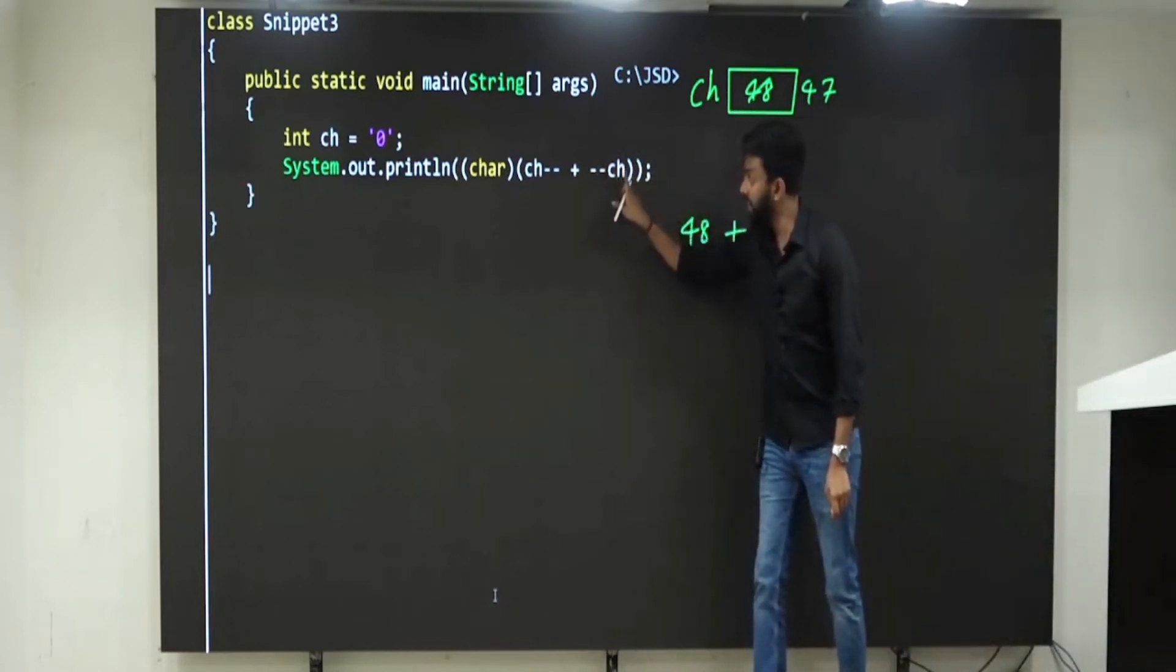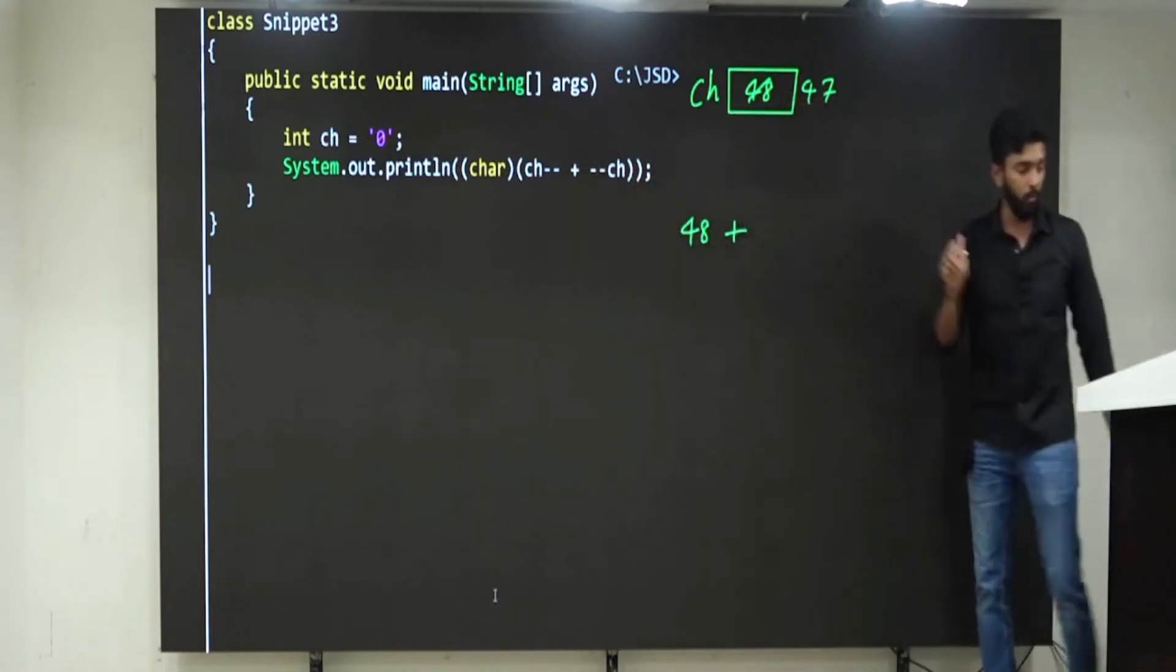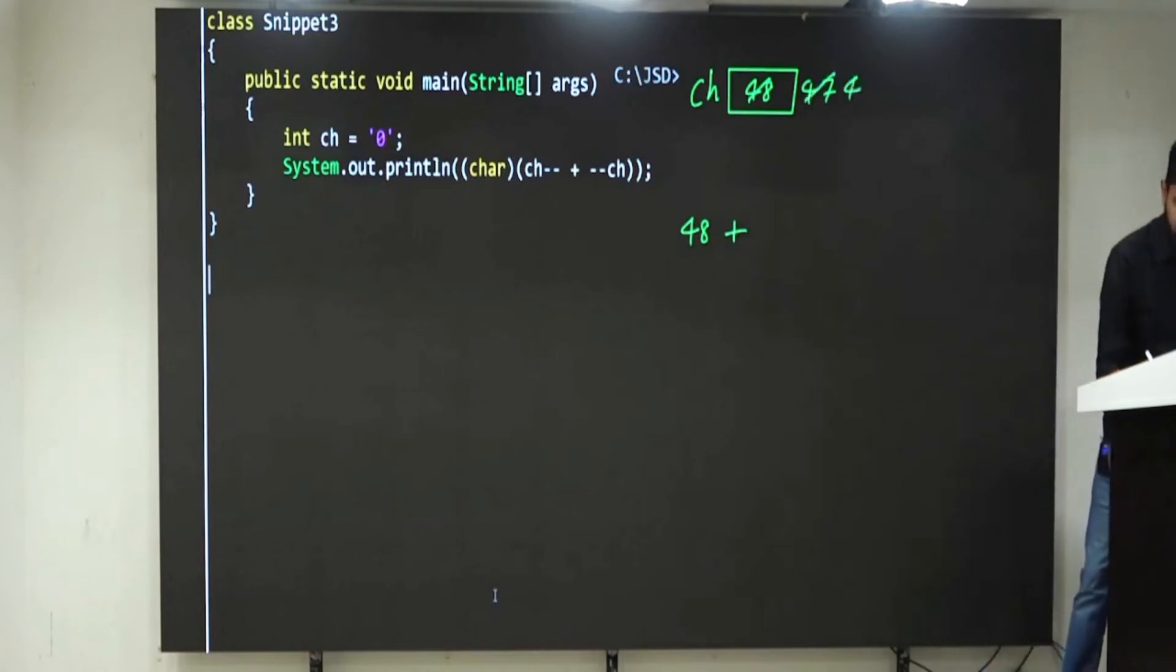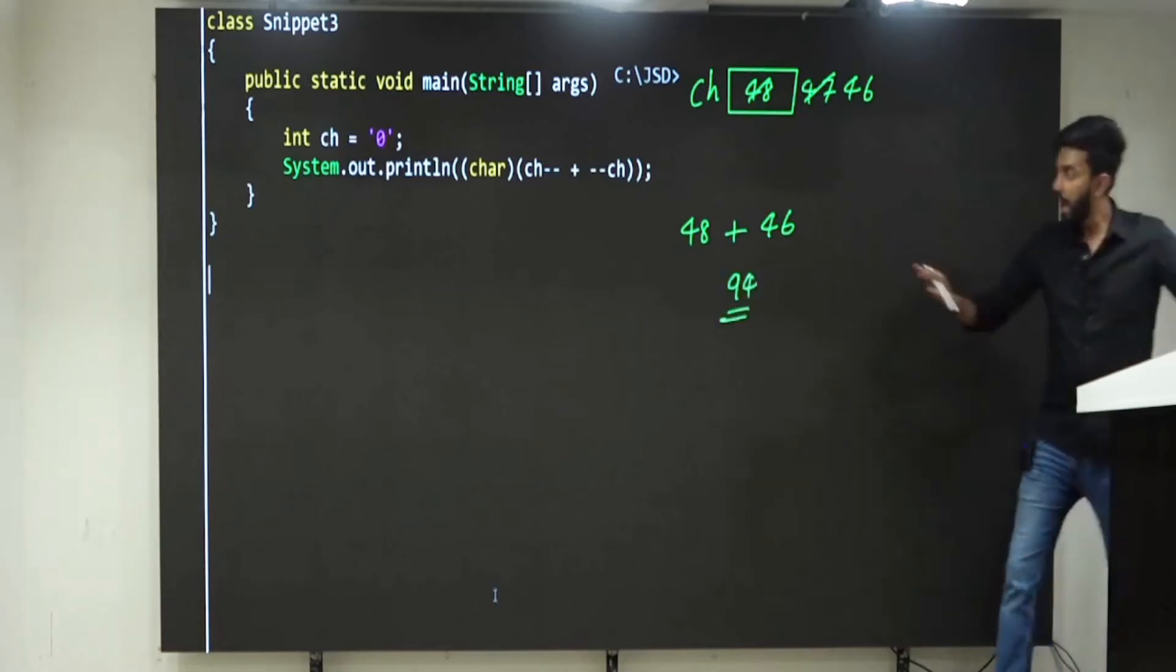First decrement, then use. First if I decrement, what will it become? 46. Then use. Clear till here? What will be the answer? 94. Clear?